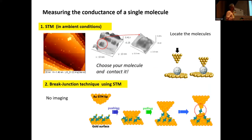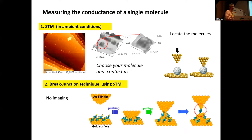For experiments, we use an STM to measure the conductance of a molecule. It's a very nice tool because you can image the surface — for example, here you can see fullerenes deposited on a surface in ambient conditions. You have atomically flat areas with single fullerenes here and there, clusters, and some structure of the fullerene visible. Then you can go to the specific fullerene you want to test, go down and touch it, and measure the current.